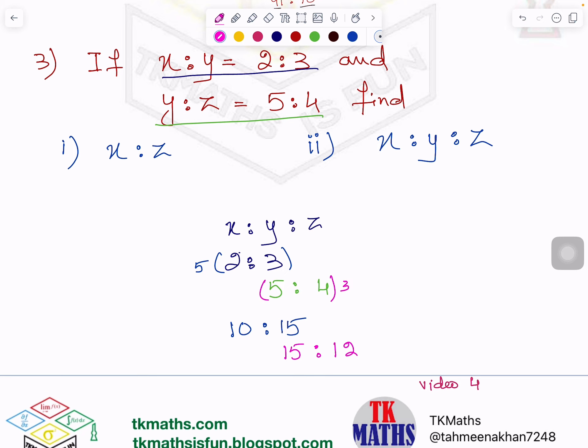So my answer of x is to z is 10 is to 12. And answer of x is to y is to z is 10 is to 15 is to 12. And I will simplify it.